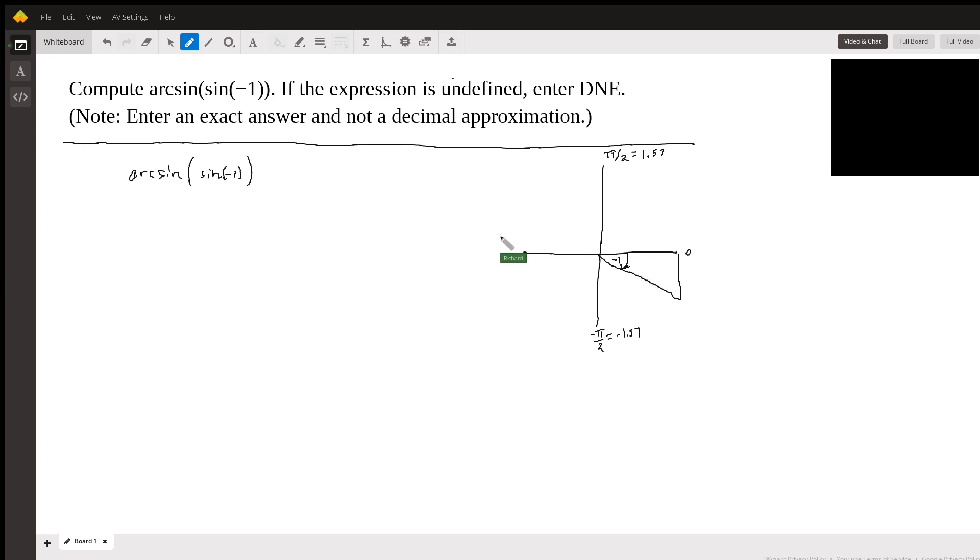Now, if I go on my calculator, the sine of negative one, just so I'm just going to carry the arc sine here, so the sine of negative one is negative 0.8415, approximately.